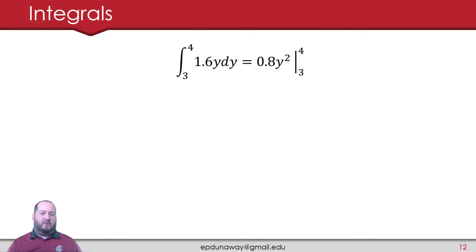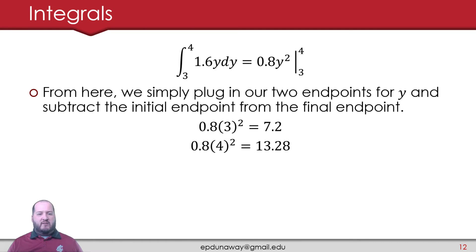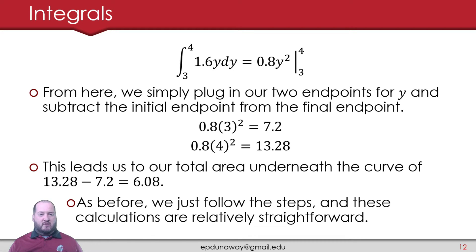All that's left to do, I need to plug in my two endpoints for y, and I need to subtract the initial endpoint from the final endpoint. Same steps as before. I'm just doing it a second time now. Plugging in 3 for y, I get 0.8 times 3 squared, which equals 7.2. Plugging in 4 for y, I get 0.8 times 4 squared, or 13.28. So now I just get the total area underneath my curve of 13.28 minus 7.2, or 6.08.